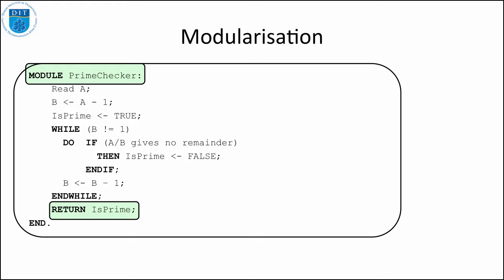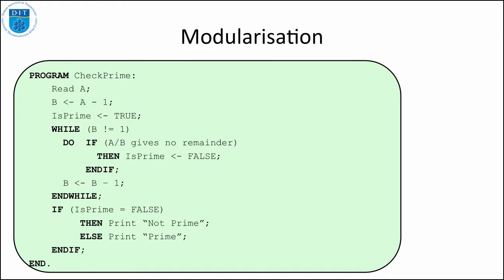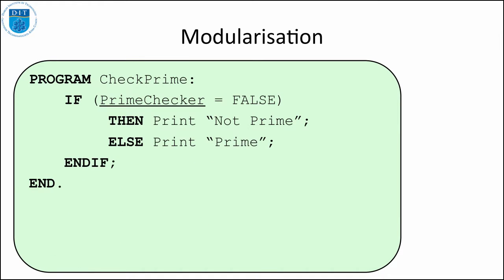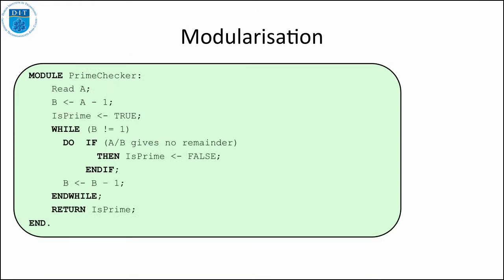So now we change what the program was initially, this is it initially, to what it is now, slightly shorter. So now all we need to do is say how do we check if the number is prime. We call the module prime checker, and if prime checker returns false then the number is not prime, and if it returns true then the number is prime.